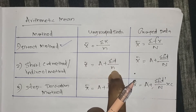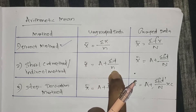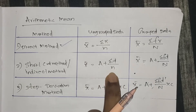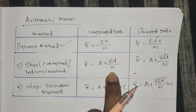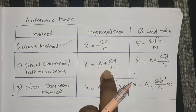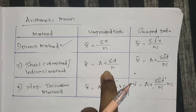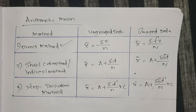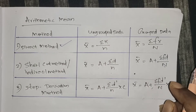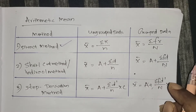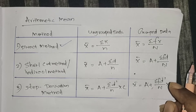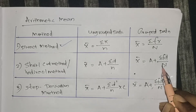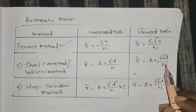The number of data — small letter n means the number of observations, so if you calculate the number of data, n equals 5. Capital N means the sum of frequency, that is the frequency total, sigma f.